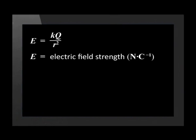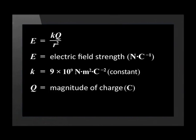There is another equation that can be used to calculate electric field strength if the distance from the charge is known. The equation states that E equals K Q over R squared. K is the same constant as that found in Coulomb's law equation, which is 9 times 10 to the 9. Q is the magnitude of the charge and R is the distance from the charge.